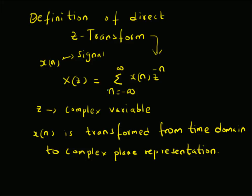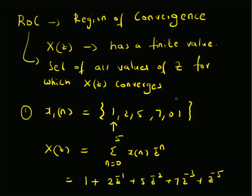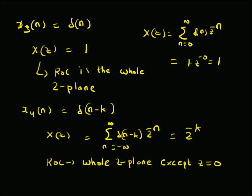To summarize, we have looked at the definition of the Z-transform, which transforms a time sequence x(n) from the time domain to a complex plane representation. X(z) is a power series and the region in which it converges is called the region of convergence. For x1(n) = {1,2,5,7,0,1} with n=0 at the first value, the ROC excludes the origin. If there are positive powers of z, z equals infinity is also excluded. For the delta function, the whole z-plane is the ROC. For a shifted delta, the ROC is the whole z-plane except the origin. Thanks for watching.